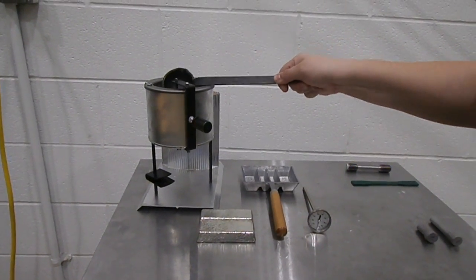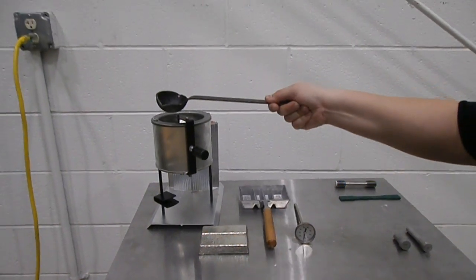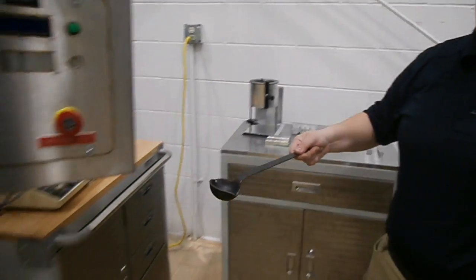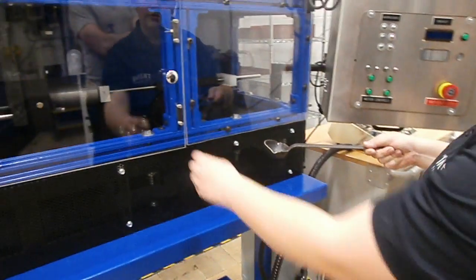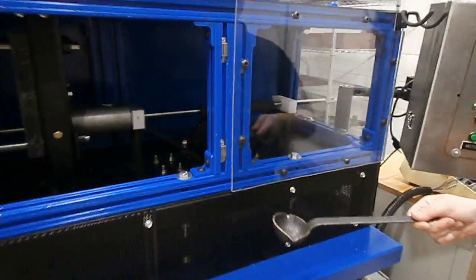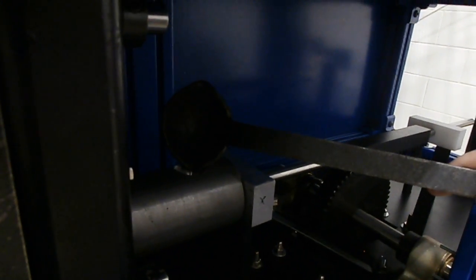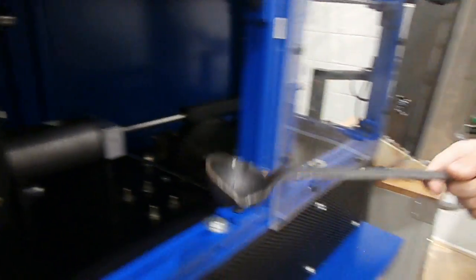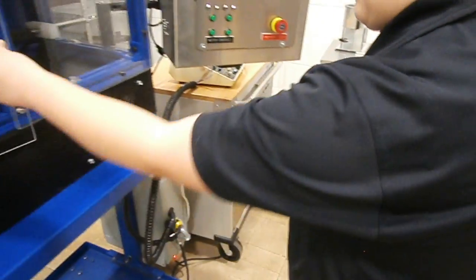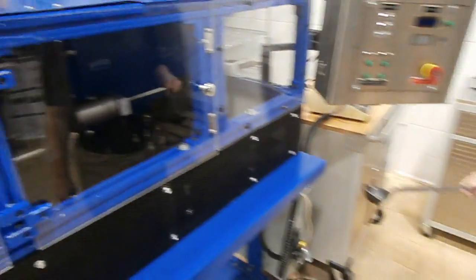Take this ladle, scoop out a shot's worth of metal, come over here, open the door to the injection system, take the metal up to the shot tube, pour it in the opening, bring it back out, close the door, and then we're ready for the electrical process.